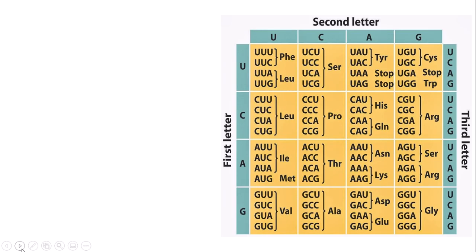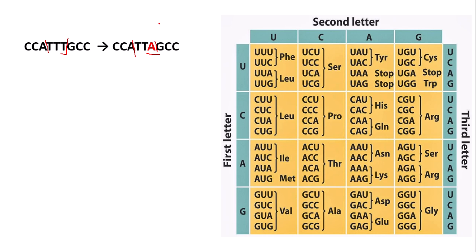Here we have the genetic code and a DNA base sequence which has had a substitution. As you can see, the T here has been substituted for an adenine, and this will have an effect on the amino acid sequence. If we split our DNA sequence into triplets or codons — which you'll be familiar with from the protein synthesis or genes, genomes and chromosomes section — the codon here is different.